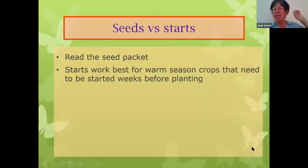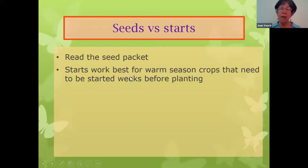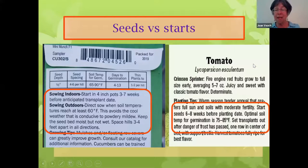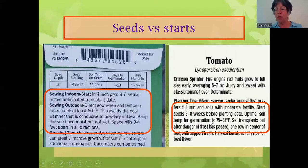While we're talking about seeds and starts, let's talk a bit more about how to decide. The first thing is read your seed packet. Starts often work better — almost always work better — for warm season crops that need to be started weeks before planting. Here's a tomato seed packet that gives you options. It says you can start your seed inside or plant it outside with directions for both. The back of the packet says start seeds six to eight weeks before planting date, meaning you're starting these in March and April. The optimum soil temperature for germination is 75 to 85 degrees.